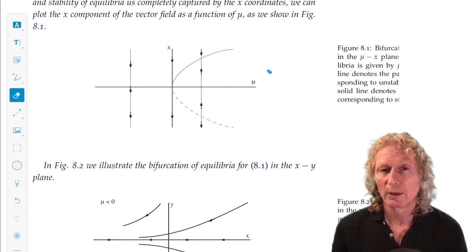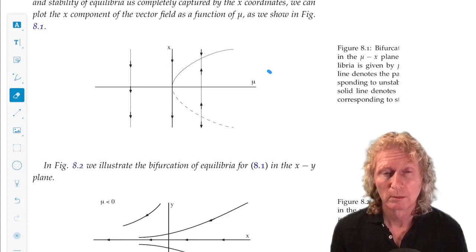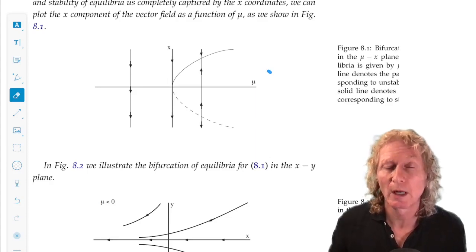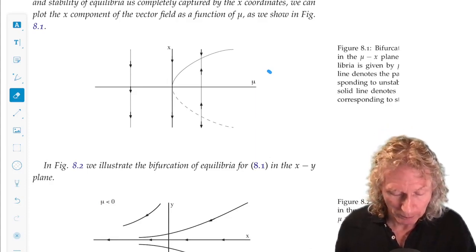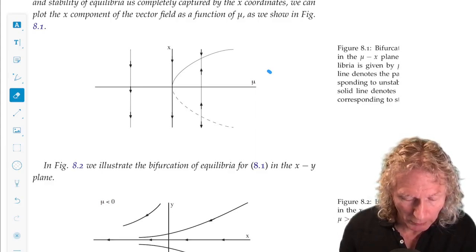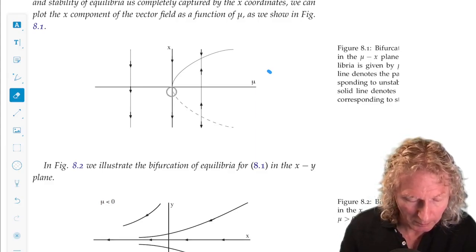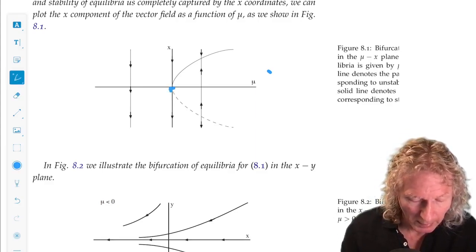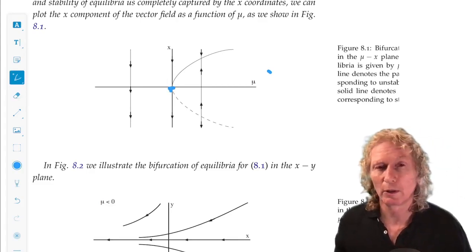The solid branch corresponds to stable equilibria. The dashed branch, unstable equilibria. And you can see that as mu goes to zero, they coalesce. And for mu less than zero, there are no equilibrium.